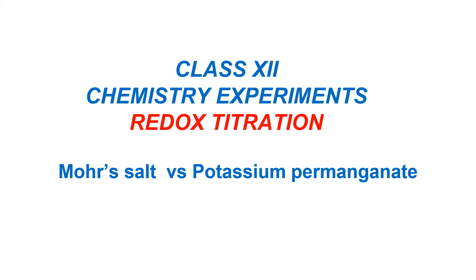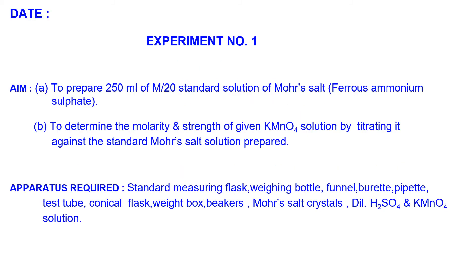Dear students, let's discuss about the DOCS titration, which is a part of class 12 chemistry experiments. The titration I am going to discuss using this presentation is Mohr salt versus potassium permanganate. Experiment number one will have the aim to prepare 250 ml of M by 20, that is 1 by 20 standard solution of Mohr salt. Mohr salt is a double salt.